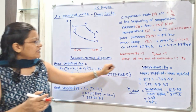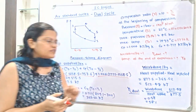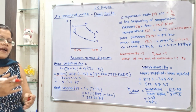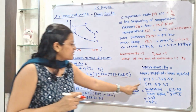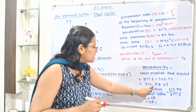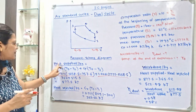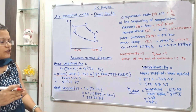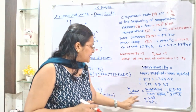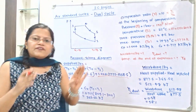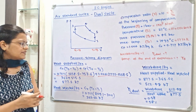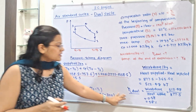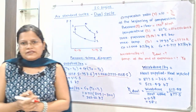Finally, the efficiency of the dual cycle = work done / heat supplied = 512.48 / 877.5 = 0.58. Multiplying by 100, the cycle efficiency is 58%.